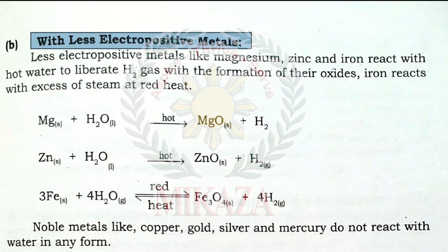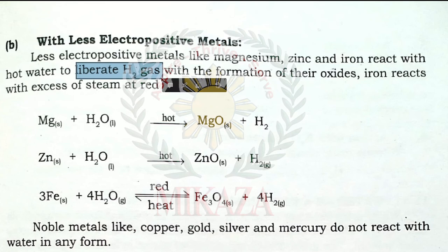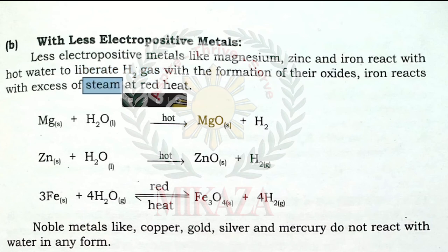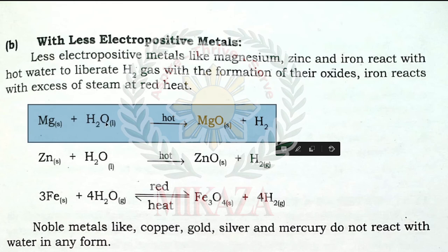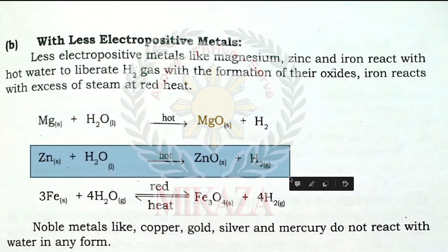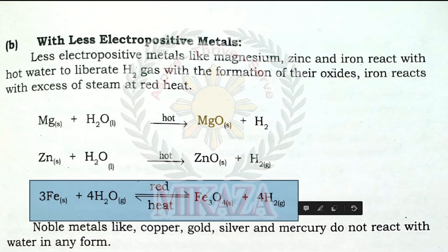Less electropositive metals like magnesium, zinc, and iron react with hot water or steam to liberate H₂ gas and form oxides. Magnesium when reacted with hot water forms magnesium oxide and hydrogen gas. Zinc when reacted with hot water forms zinc oxide and hydrogen gas. Iron when reacted with hot water forms iron oxide and hydrogen gas.